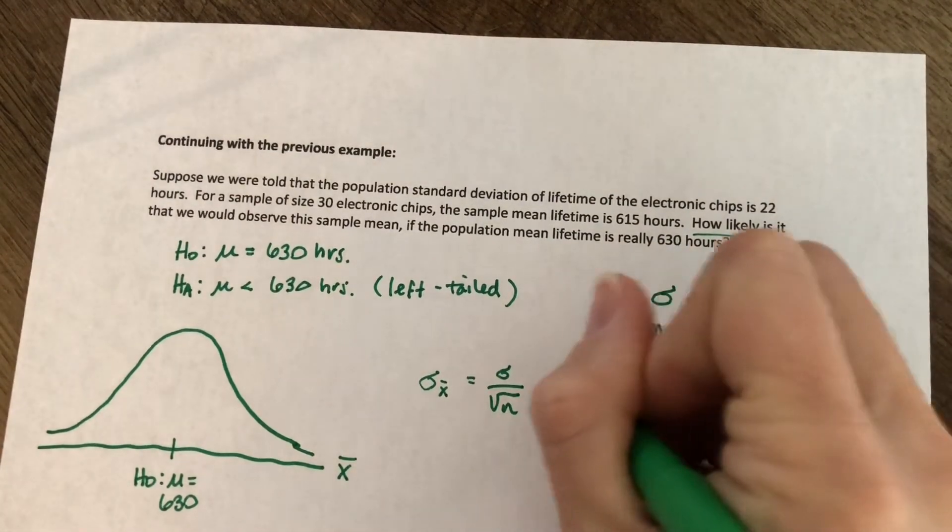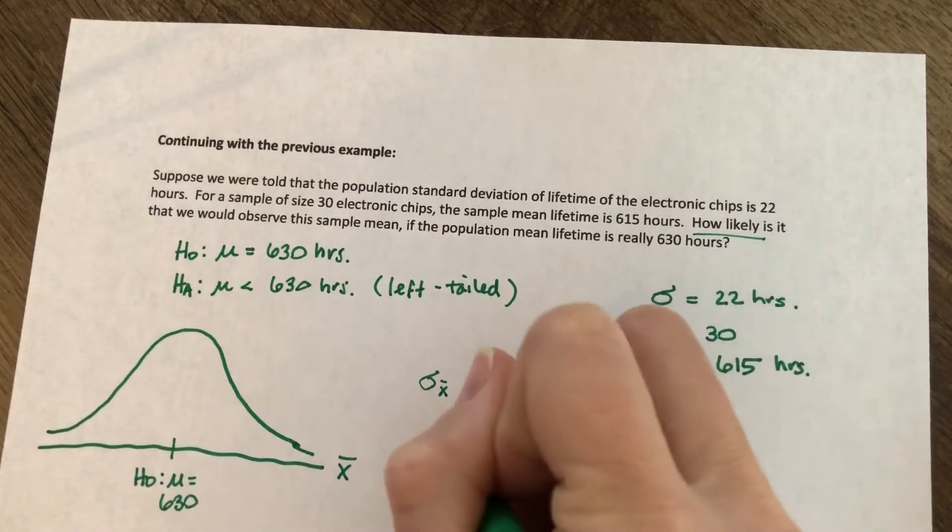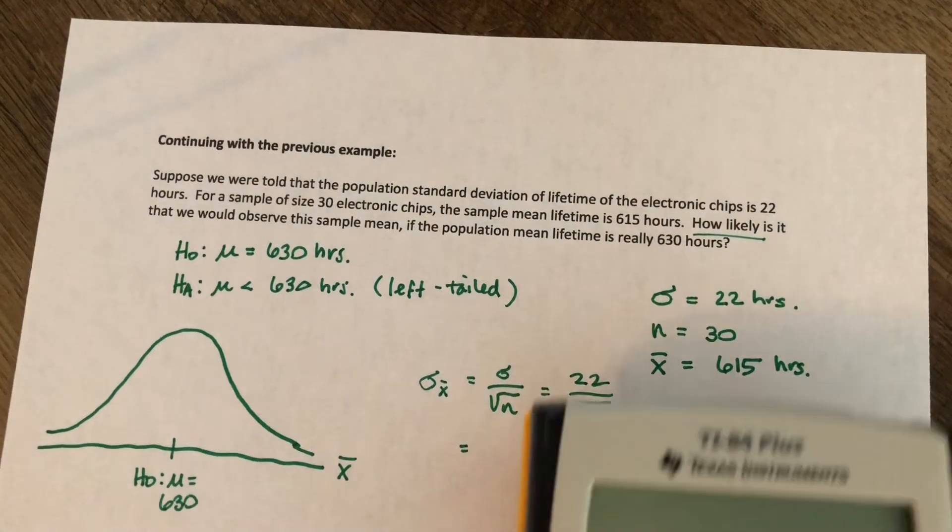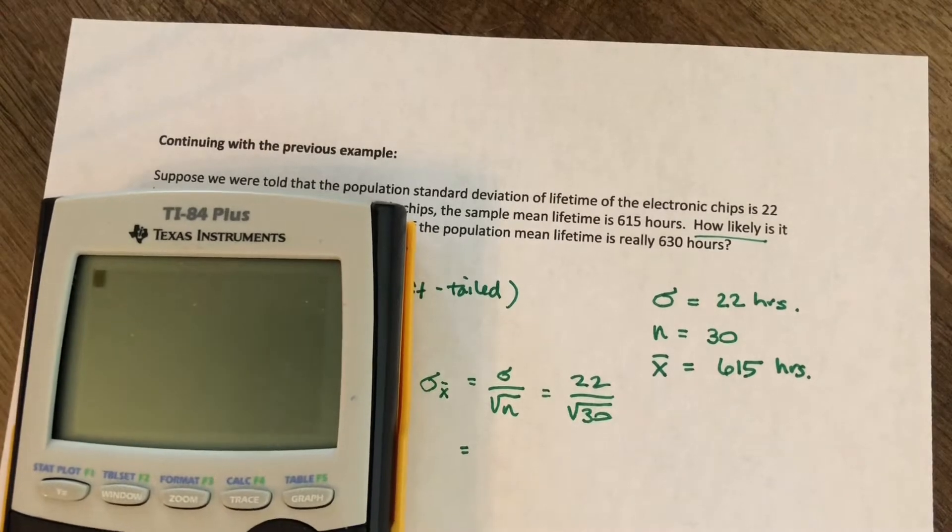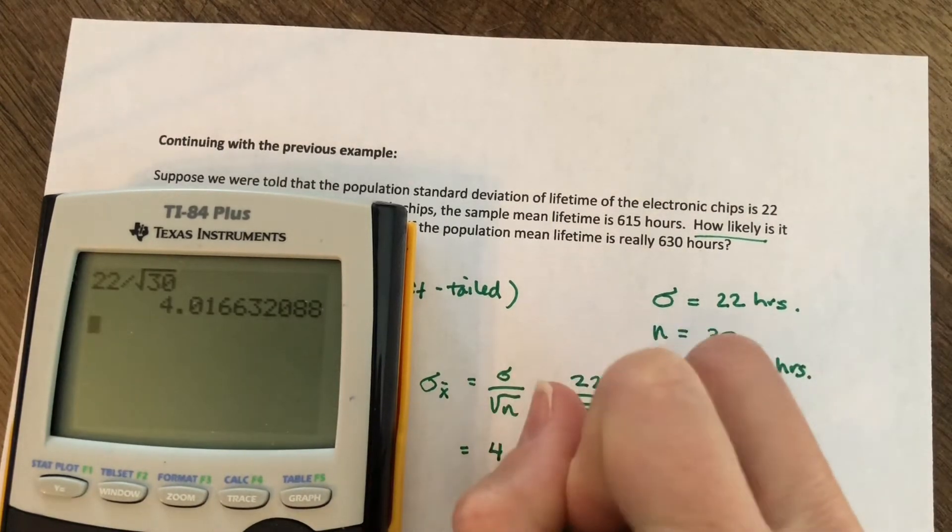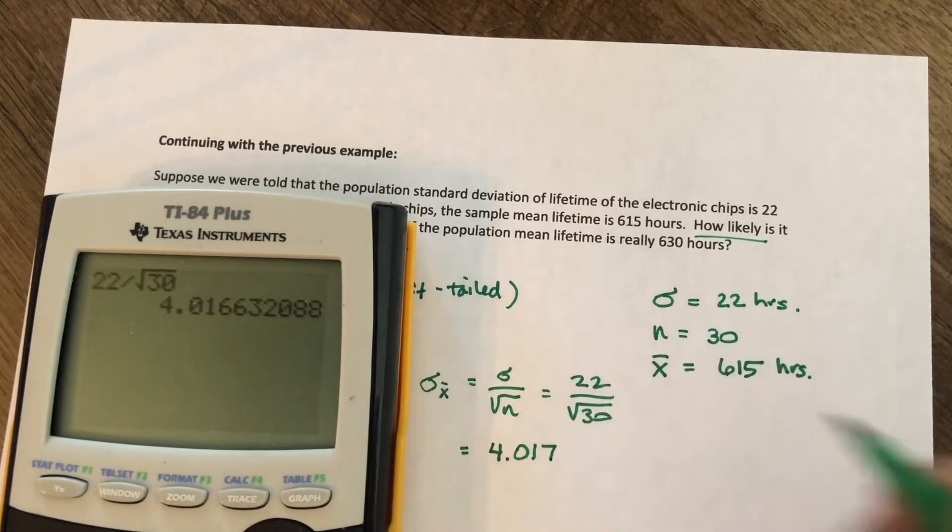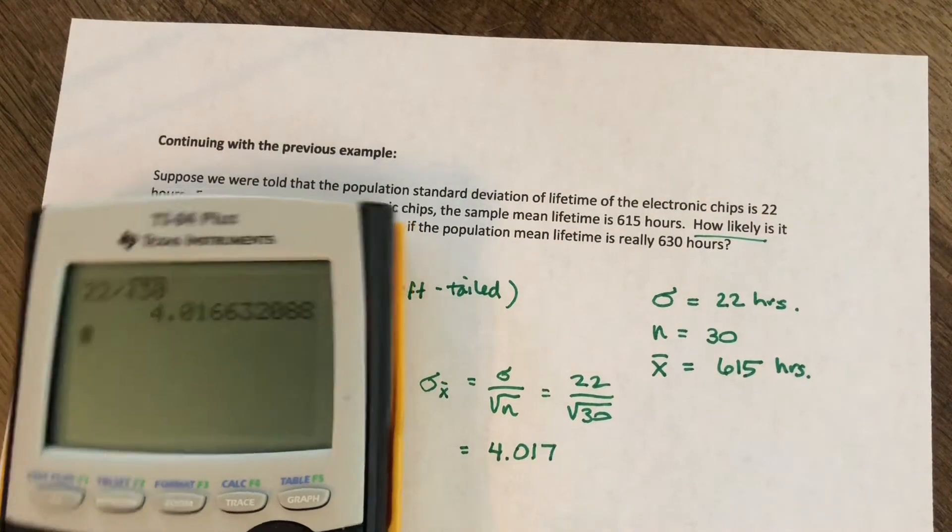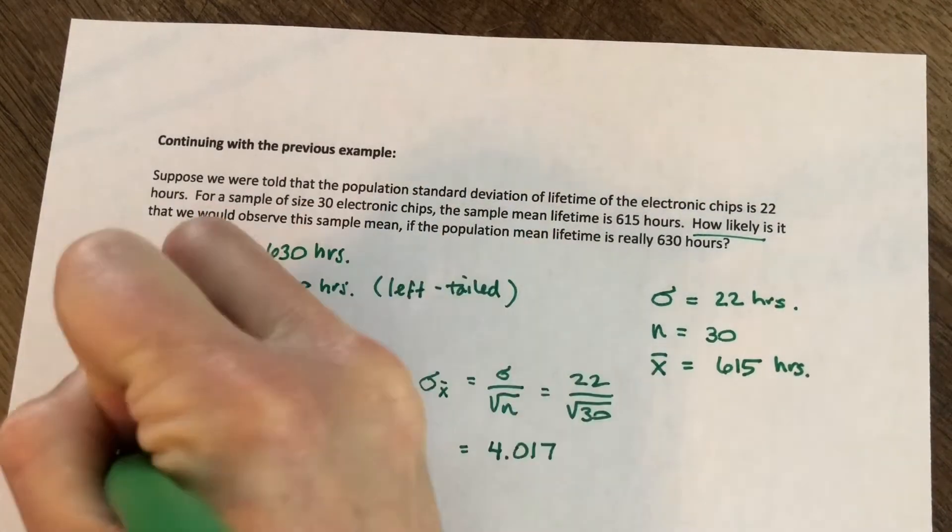We know both of those things. Sigma is 22 and n is 30. And so if we go to the calculator for a second here, we've got 22 over the square root of 30 is 4.01. We'll round up to 4.017.